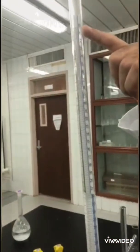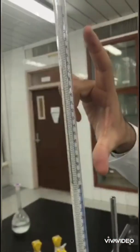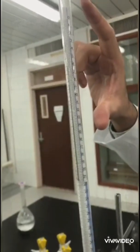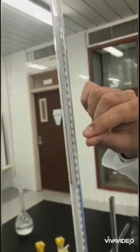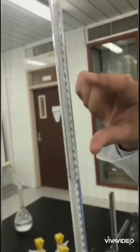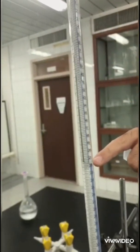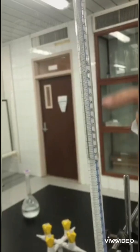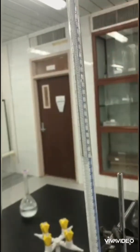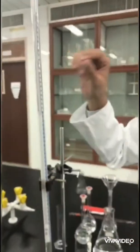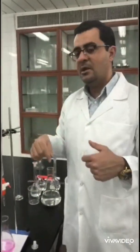It's 21.6 milliliters. This is the final volume while the initial volume was zero. Now we are concerned with the difference between them. We are concerned with the amount of sodium hydroxide used to neutralize the KHB acid. This amount is the difference between 21.6 and zero, which means 21.6 milliliters. This volume will be used in the next step in calculations.